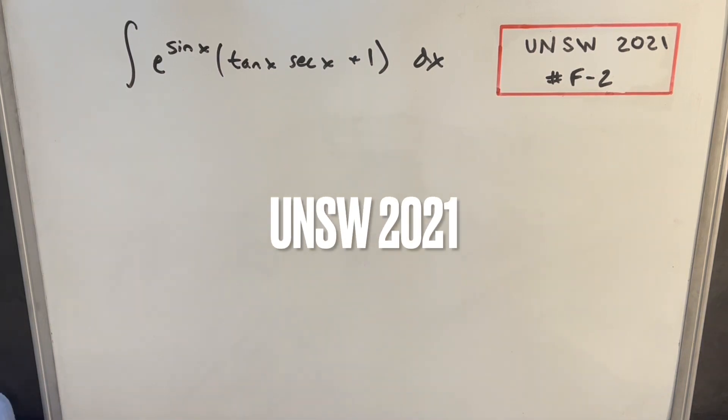Hey, we have here today a problem from UNSW 2021. This is from the final round, problem number two. We have the integral of e to the sine x times tan x secant x plus 1 dx.